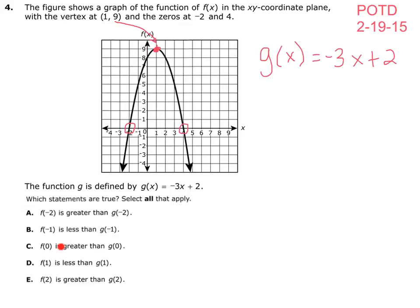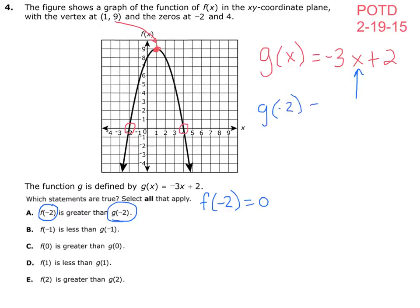Pause the video, work A through E, pick which ones you think are true, then push play to see if you are right. Let's look at A. When x is negative 2 on f of x, y is at 0, so f of negative 2 equals 0. For g of negative 2: negative 3 times negative 2 plus 2 equals 6 plus 2, which equals 8. The statement says f of negative 2 is greater than 8 — that's 0 greater than 8 — which is false, so A is false.